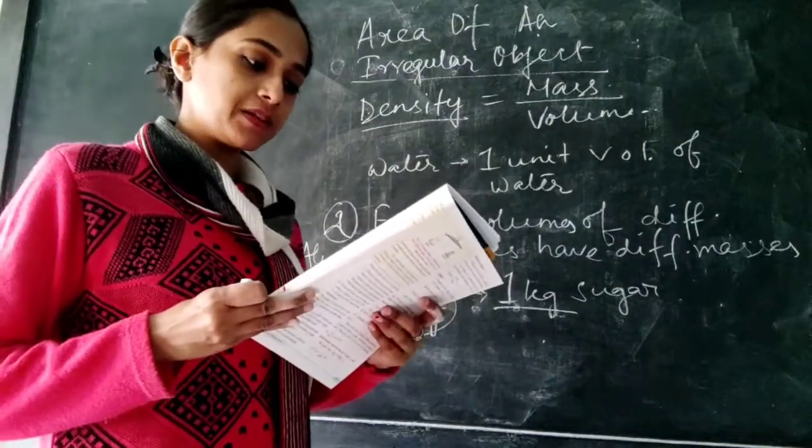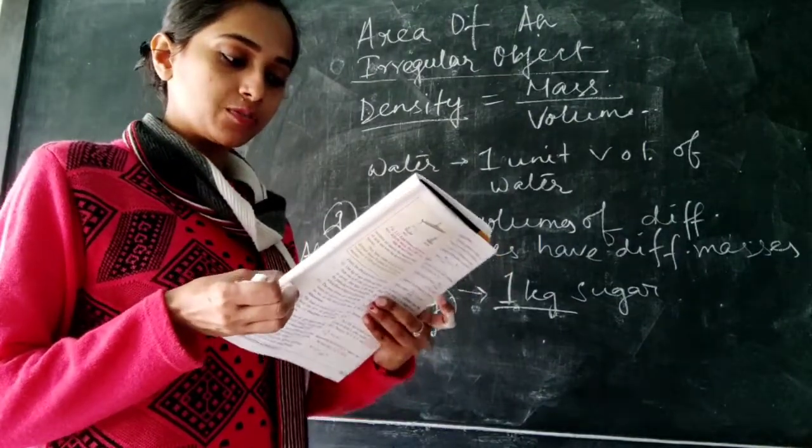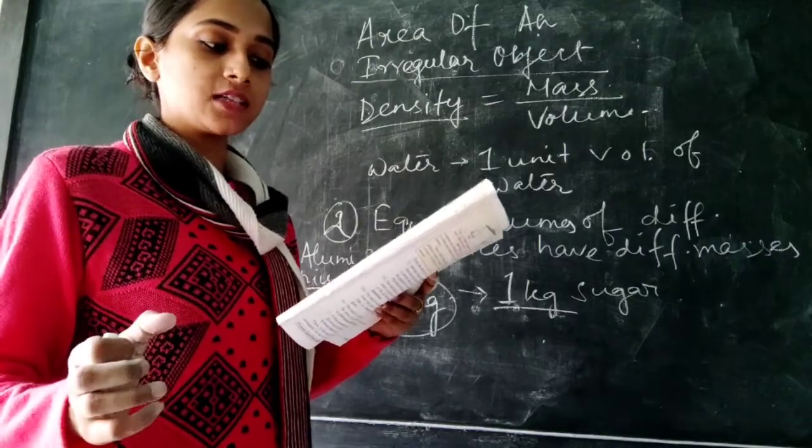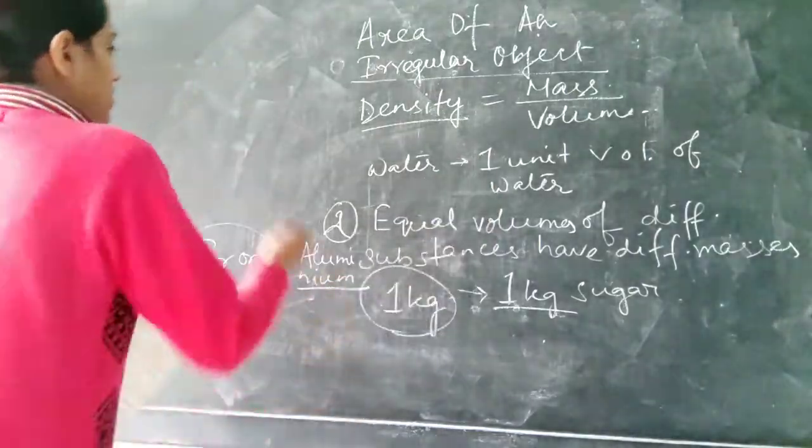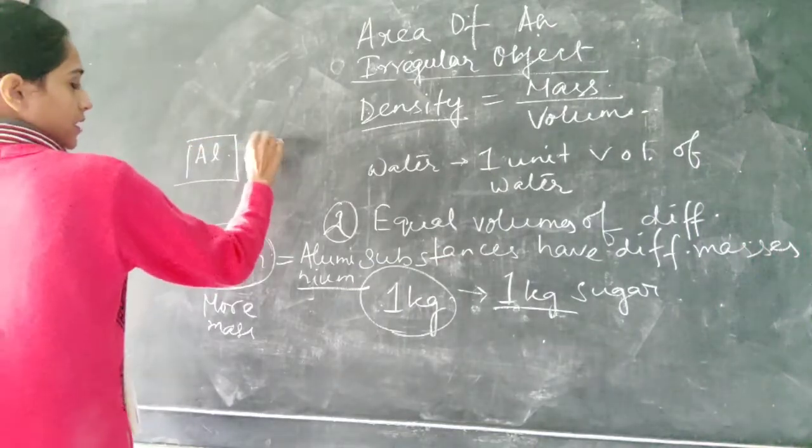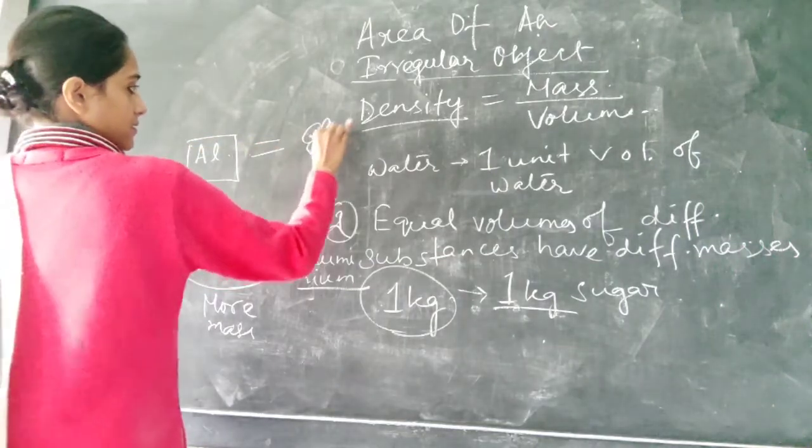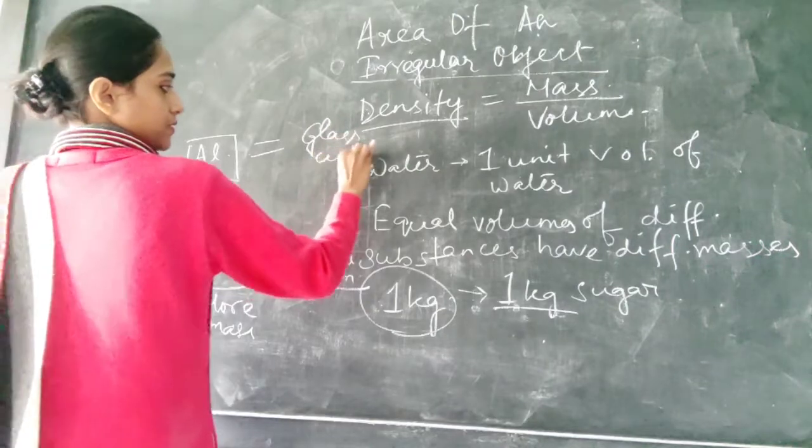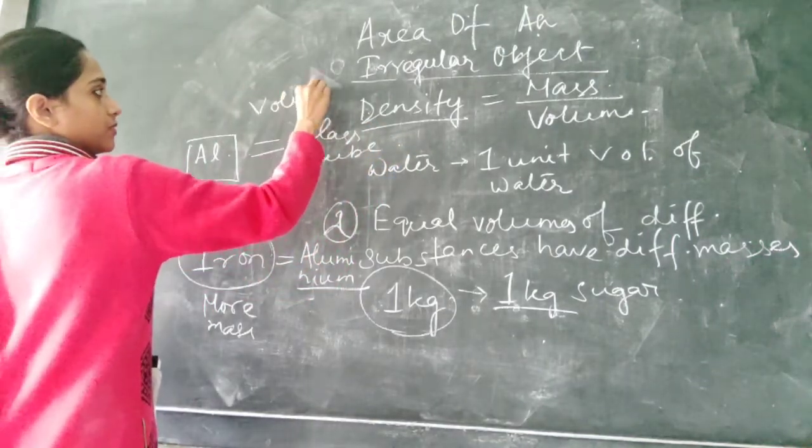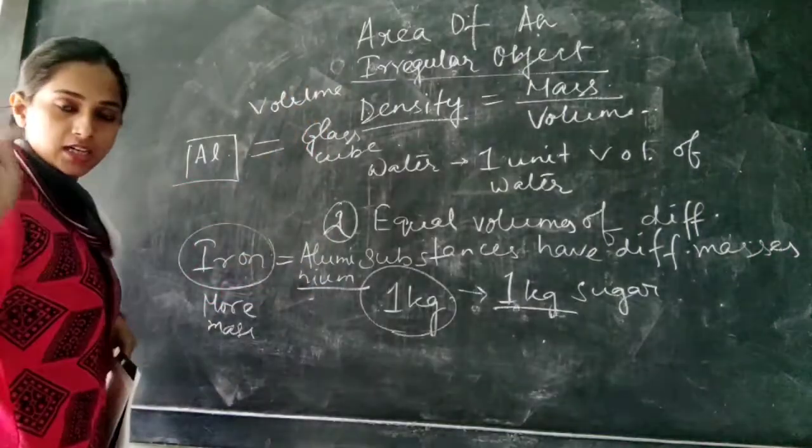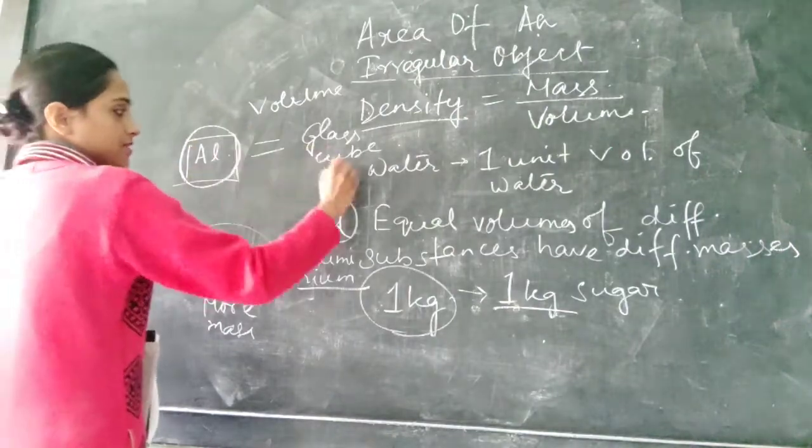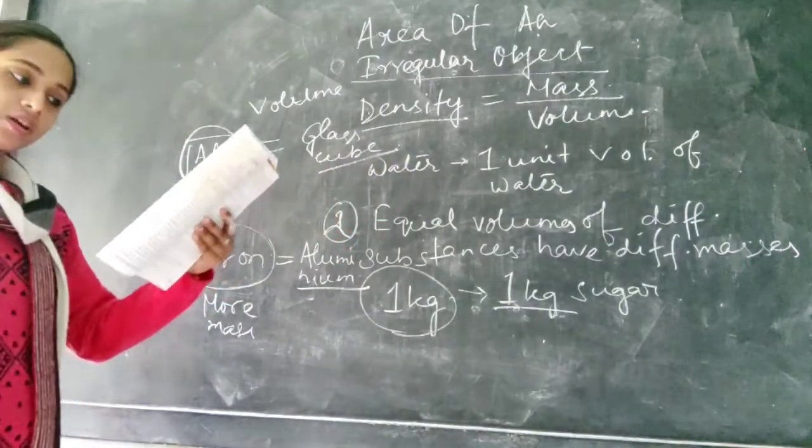Next another example is that aluminum cube is more than the mass of glass cube of the same volume. Aluminum cube and glass cube, having same volume. But if I consider it on the basis of mass then it is having more mass than the glass cube.